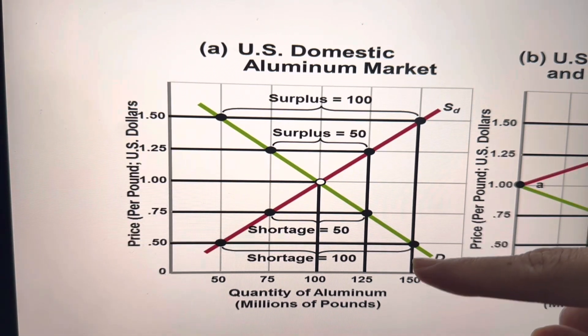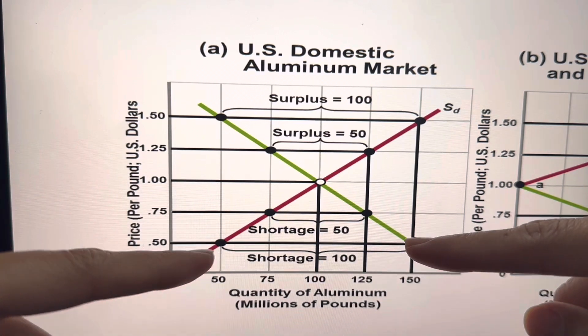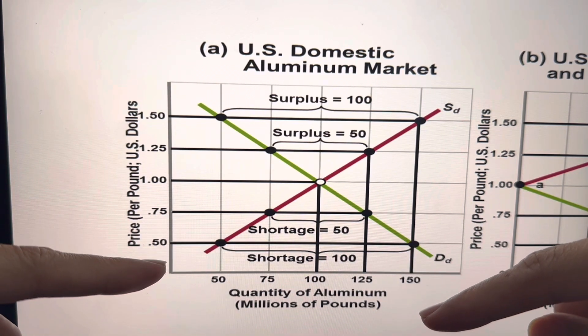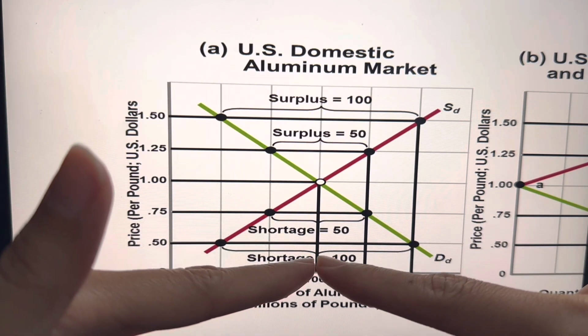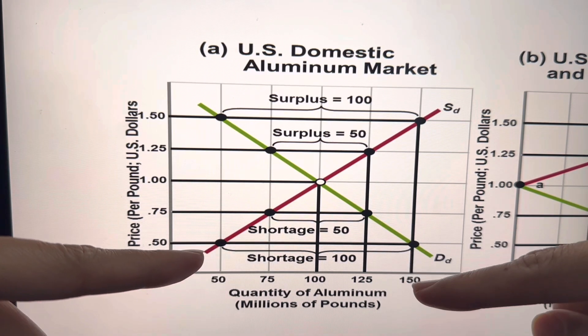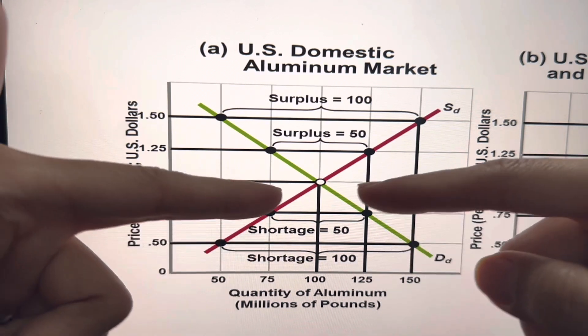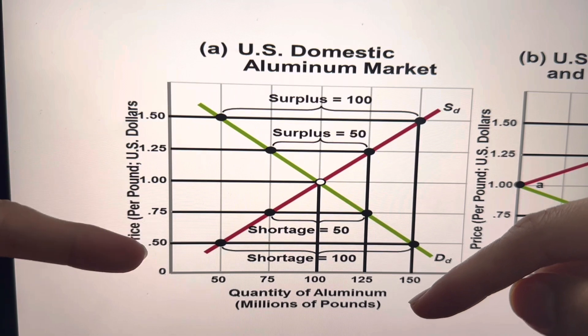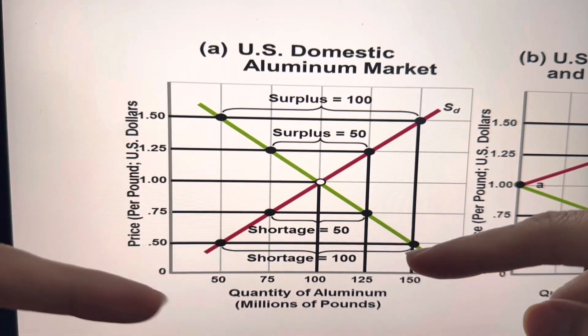Similarly, if the excess demand is much wider at 50 cents, the shortage is 100. How do you get that? 150 minus 50. So as you can see, the lower the price below the domestic price, the bigger is the shortage.